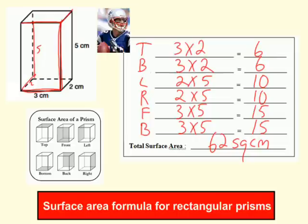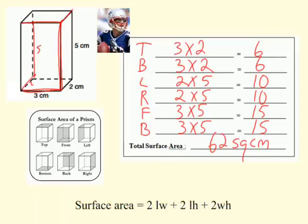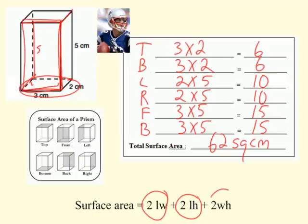And there is actually a formula that you can use for calculating surface area of a rectangular prism. It's essentially what we've done here. You double the length and width, and that's what we did. You double the length and height, and that's what we did here. We doubled the length and the height. So that's all there is to it in calculating the surface area of a rectangular prism.